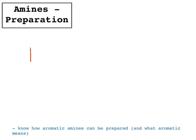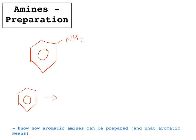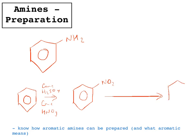Aromatic amines are where you end up with a benzene ring with an NH2. To make that, starting from a benzene ring, you first have to turn it into nitrobenzene. To do that, you need concentrated H2SO4 and concentrated nitric acid — mix those together to make a nitronium ion, which reacts to put a nitro group on your benzene, as discussed in a different video. You then need to reduce that nitro group to form your amine, using HCl (hydrochloric acid) with a tin catalyst.